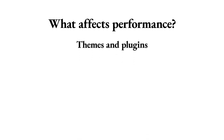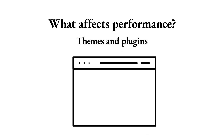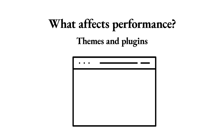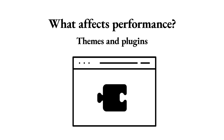Themes and plugins. Bloated themes that load too many assets are among the biggest culprits of poor performance scores. Similarly, the quality of the plugins you use influences how fast your site will perform, both objectively and perceivably. Plugins that perform excessive requests to external services, load multiple assets, and constantly perform database queries will bog down even the best configured server.